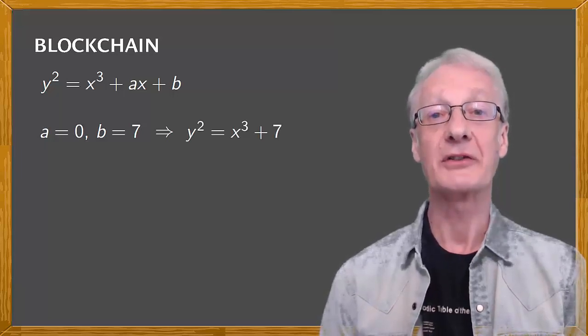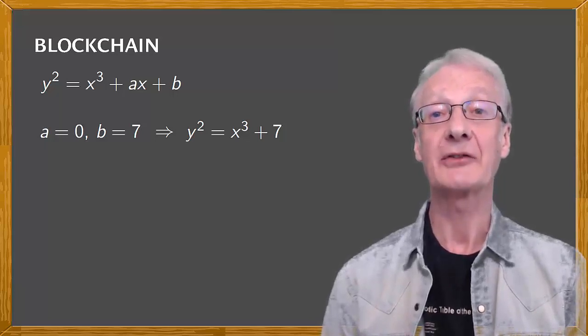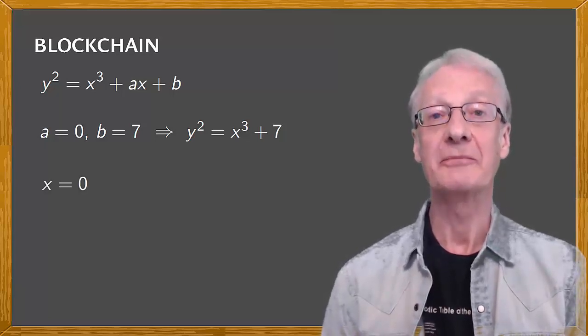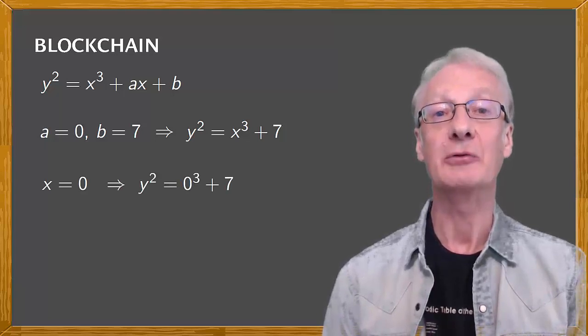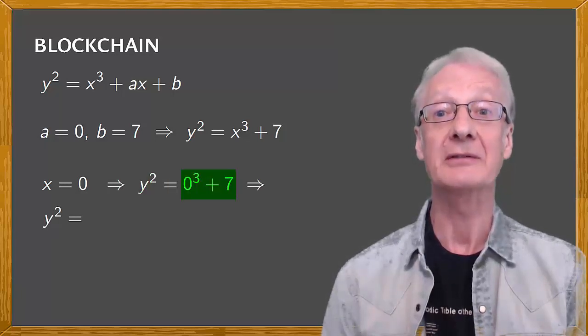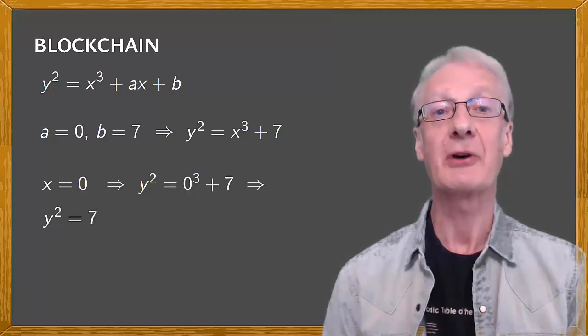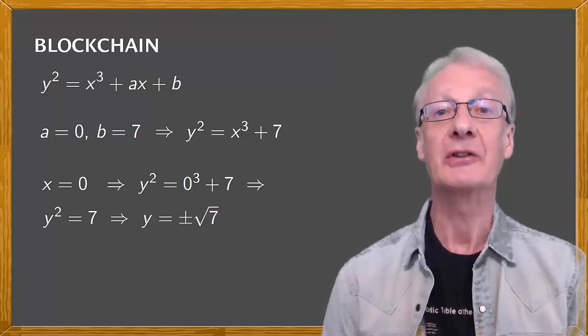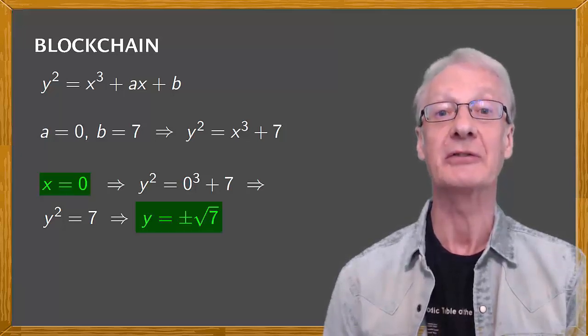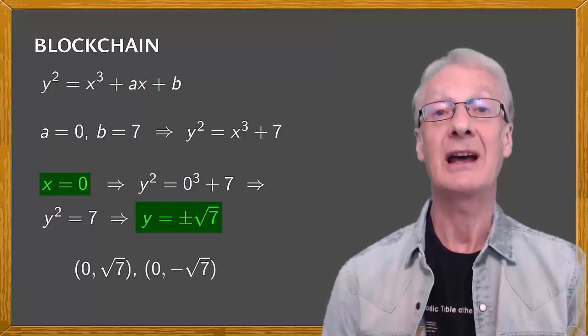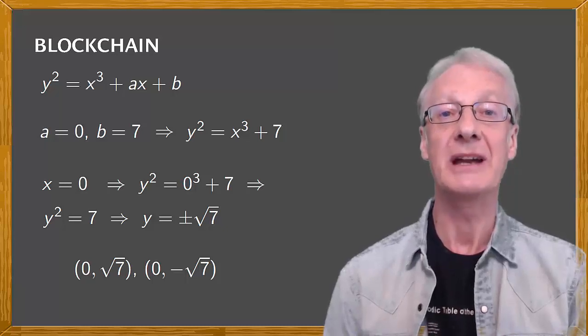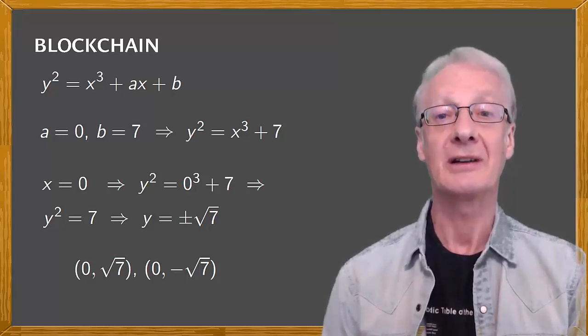To calculate points on this curve, you just put in values of X and figure out the corresponding value or values of Y. For example, when X equals 0, the equation becomes Y squared equals 0 cubed plus 7, or Y squared equals 0 plus 7, which is 7. Taking the square root of both sides, Y equals the positive or negative root 7. This gives us two points on our elliptic curve, 0 square root of 7 and 0 negative square root 7. And we can carry on finding many more points to produce a graph like the one shown here.